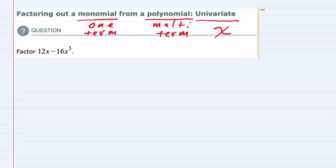So we're factoring 12x minus 16x cubed. There are two terms here: the 12x term and the minus 16x cubed term.